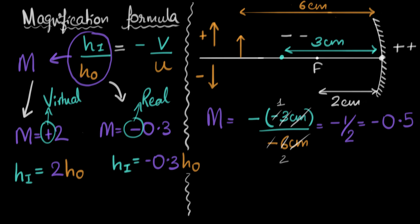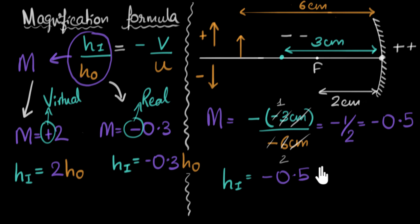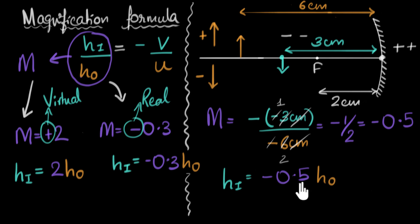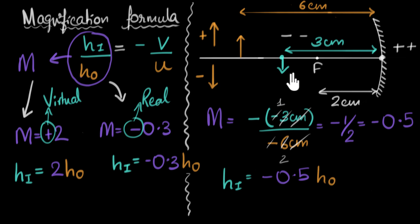So M = −0.5 means the image height is −0.5 times the object height. The negative sign tells us this is a real, inverted image. The magnitude 0.5 means the image is half the height of the object — it's diminished. For example, if the object height is 10 cm, the image height is 5 cm; if 20 cm, then 10 cm.